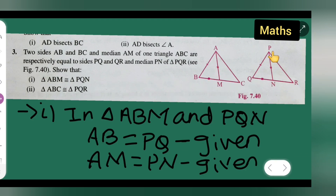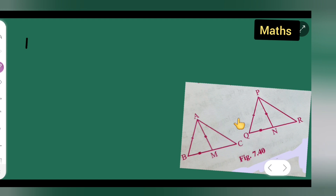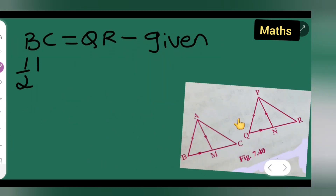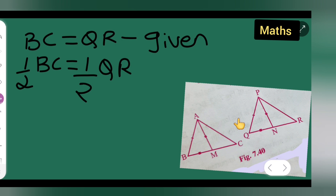AM = PN is given from the question. Next, BC = QR, which is also given. However, we have taken only triangles ABM and PQN, so C and N are not directly in these triangles. So we multiply half on both sides: half of BC = half of QR. Half of BC is BM, and half of QR is QN. Therefore, BM = QN.